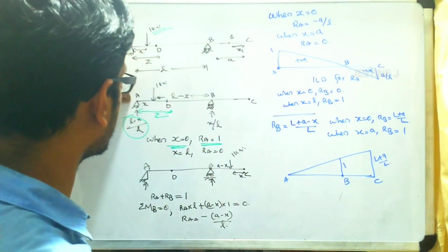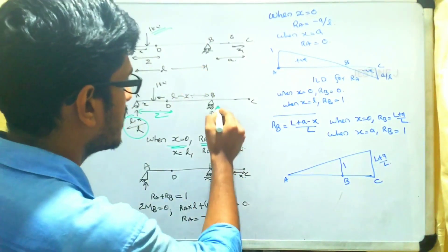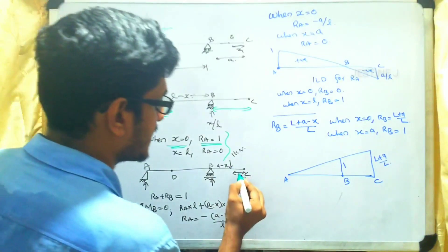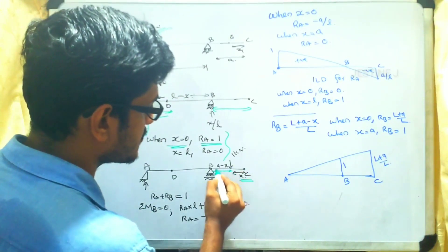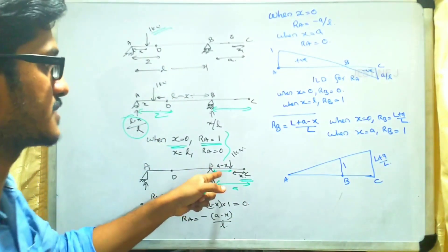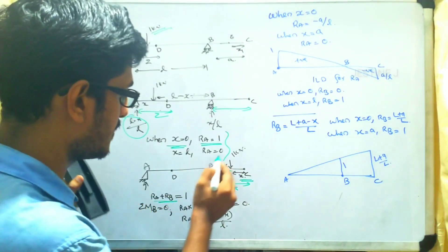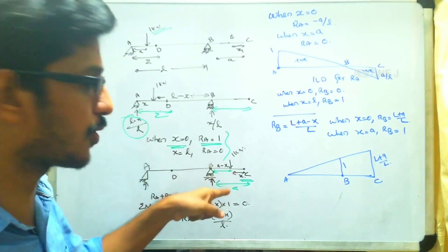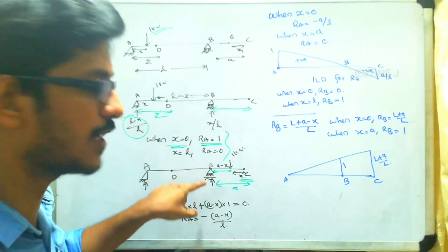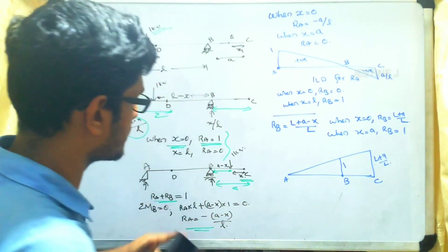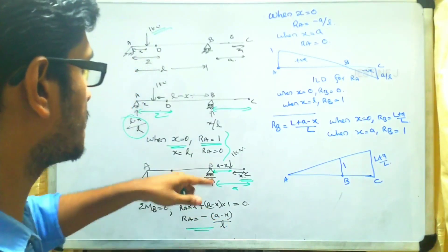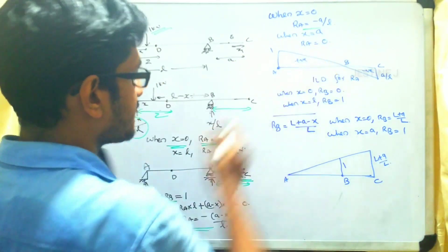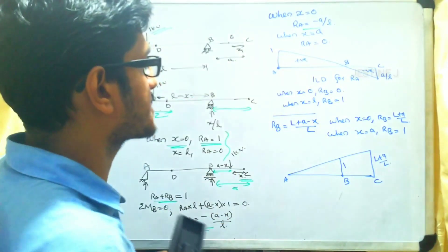The variation from x equals 0 to x equals L has been discussed. Now we find what happens when the load acts on the overhanging portion BC. Taking the 1 kN acting at distance x from point C, with total overhang distance A, the remaining distance is A minus x. Taking moments about B gives RA equal to minus (A minus x)/L. When x equals 0, RA equals minus A/L, and when x equals A, RA equals 0.